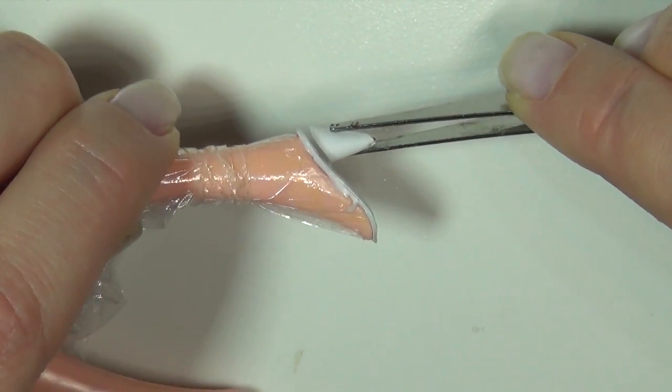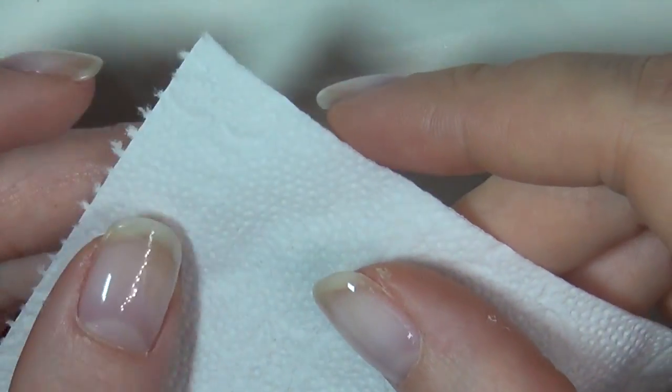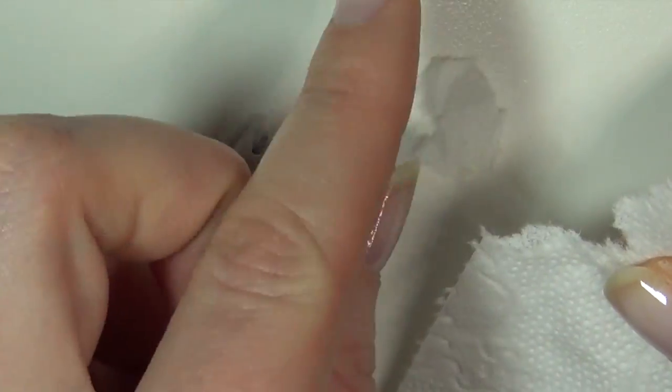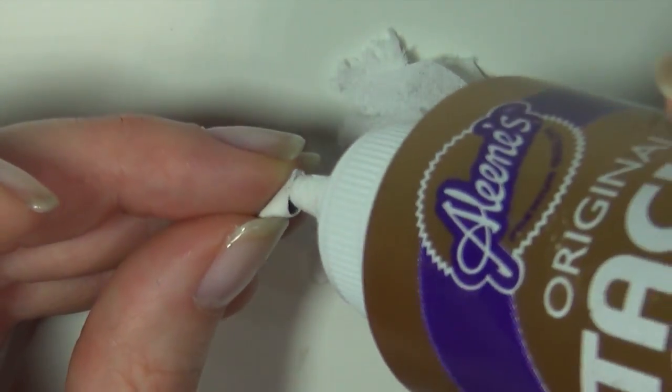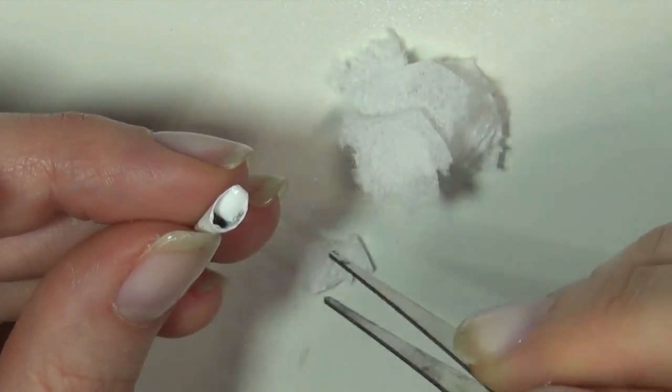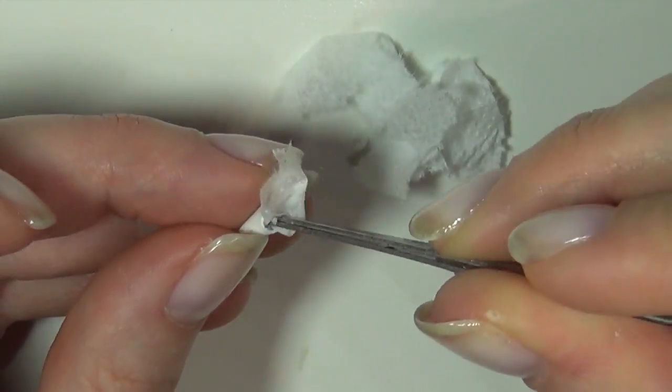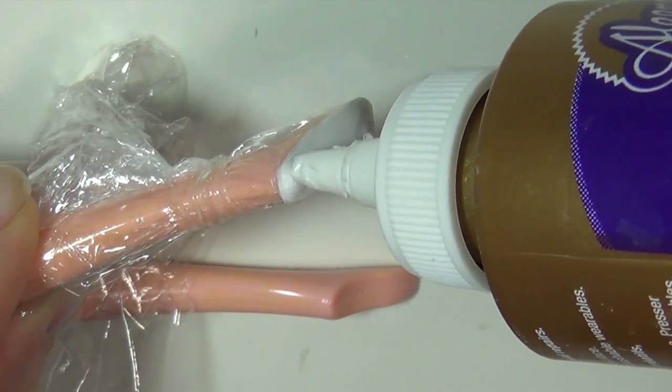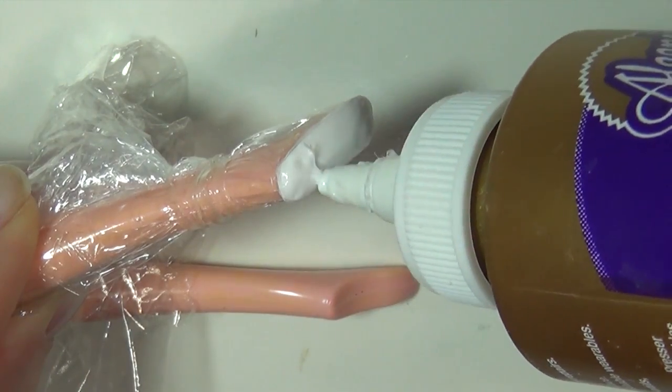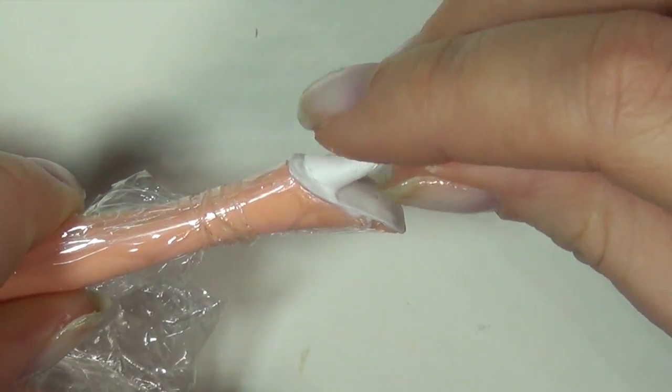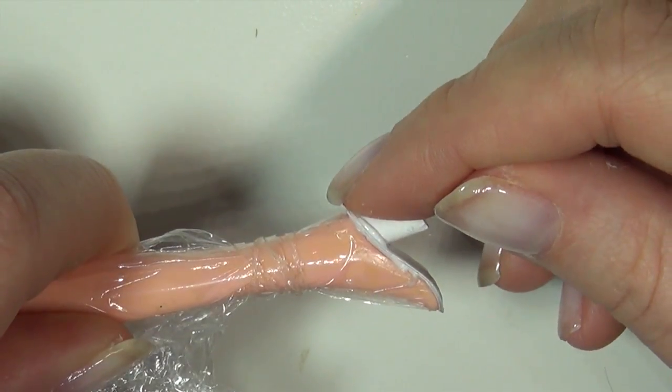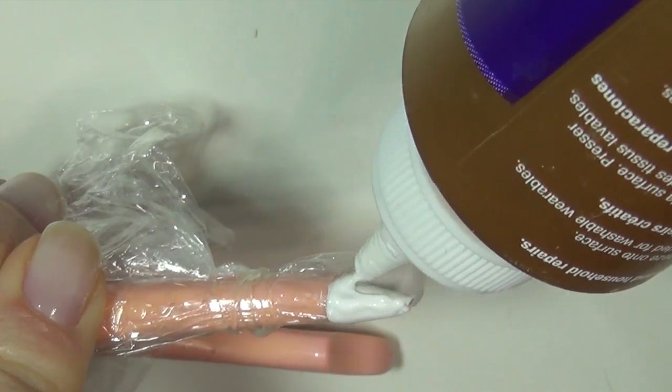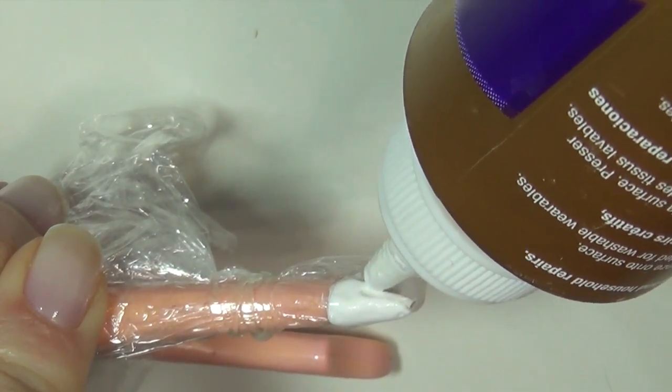Once the heel matches the shoe, we're going to fill it with some toilet or tissue paper and glue. Let this all dry completely before moving on.